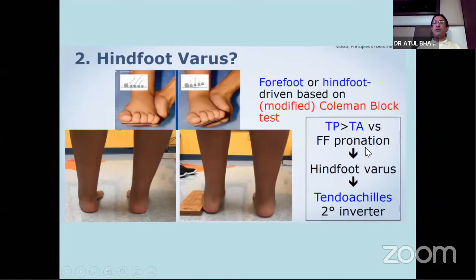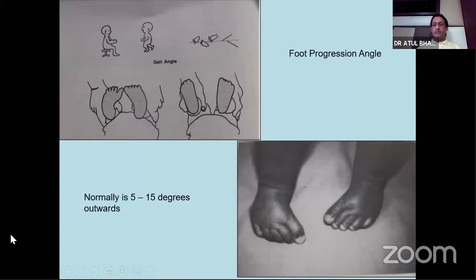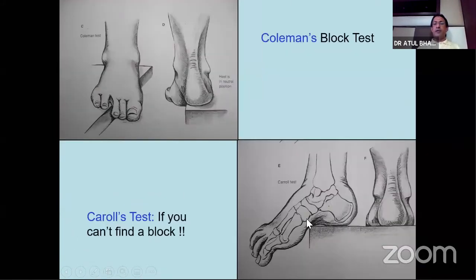If there is a hindfoot-driven varus, there are only three causes: TA contracture, tibialis posterior contracture, or very rarely tibialis anterior contracture. You can do this test in various ways - as described by Coleman, where you get the forefoot off a block, or as described by Carrol, where you take the foot off a step or a stool. Sometimes you may not have a block available in the exam, so you may have a small platform. If the forefoot is off weight bearing, you look at the foot from behind and make sure whether the heel is neutral, varus, or valgus. Also look at the foot progression angle - normally the foot points 15 degrees outwards.